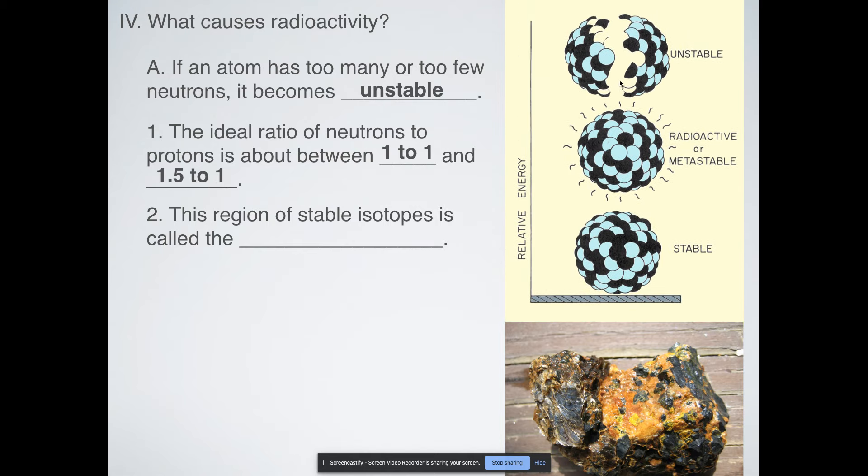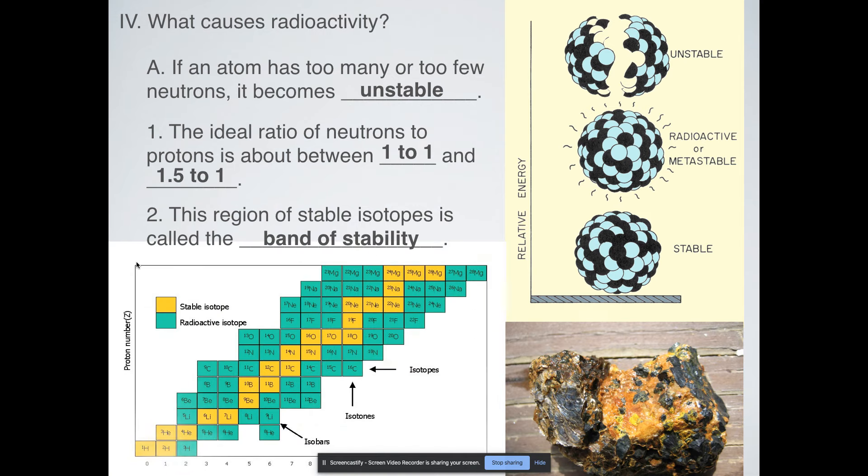When something is unstable, radioactive decay occurs, and then the nucleus of that isotope splits into two or more parts. The region of stability that we have is called a band of stability. And the way you get a band of stability is by looking at the proton number and then taking a look at the mass number also.